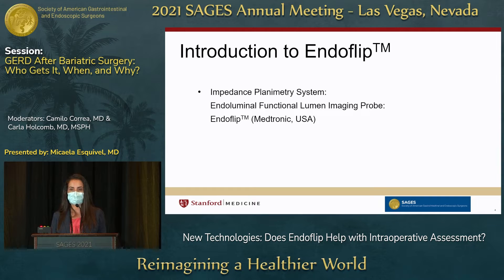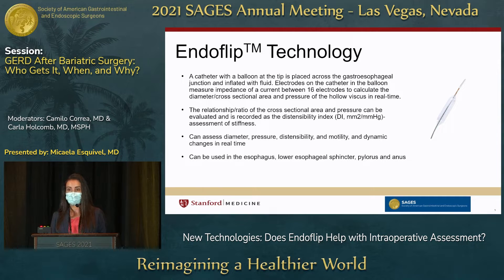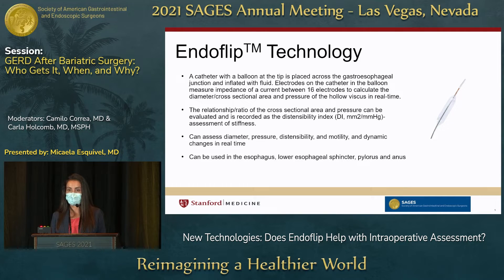Endoflip is an endoluminal functional lumen imaging probe — an impedance planimetry system. As you can see from this image on the right, it's a catheter with a balloon at the tip that, for our purposes, would be placed across the GE junction and inflated with fluid. Electrodes on the catheter and the balloon measure impedance of a current between 16 electrodes within the catheter. They can calculate the diameter, the cross-sectional area, and the pressure of a hollow viscus in real time.